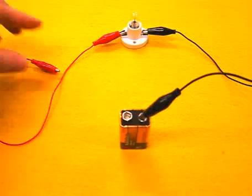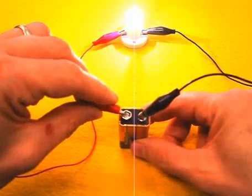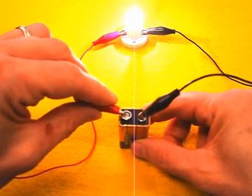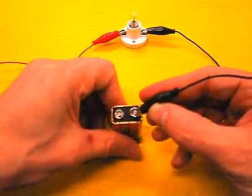A light bulb doesn't care what direction the current flows. Here's a battery and an incandescent light bulb, and it works fine either way I have the battery.